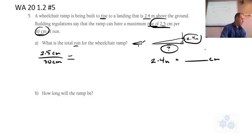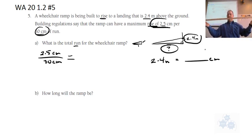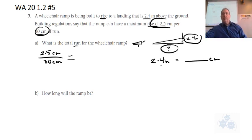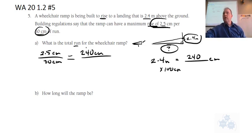A thousand? Not quite. Here's a meter stick — remember this one? In one meter, there are how many centimeters? A hundred — that's right, there are a hundred centimeters. So for every meter, we multiply by 100 centimeters. So that's going to be 240 centimeters. I'm going to put 240 centimeters right here — that's because the top is the rise part, and the bottom is the run. Good so far?